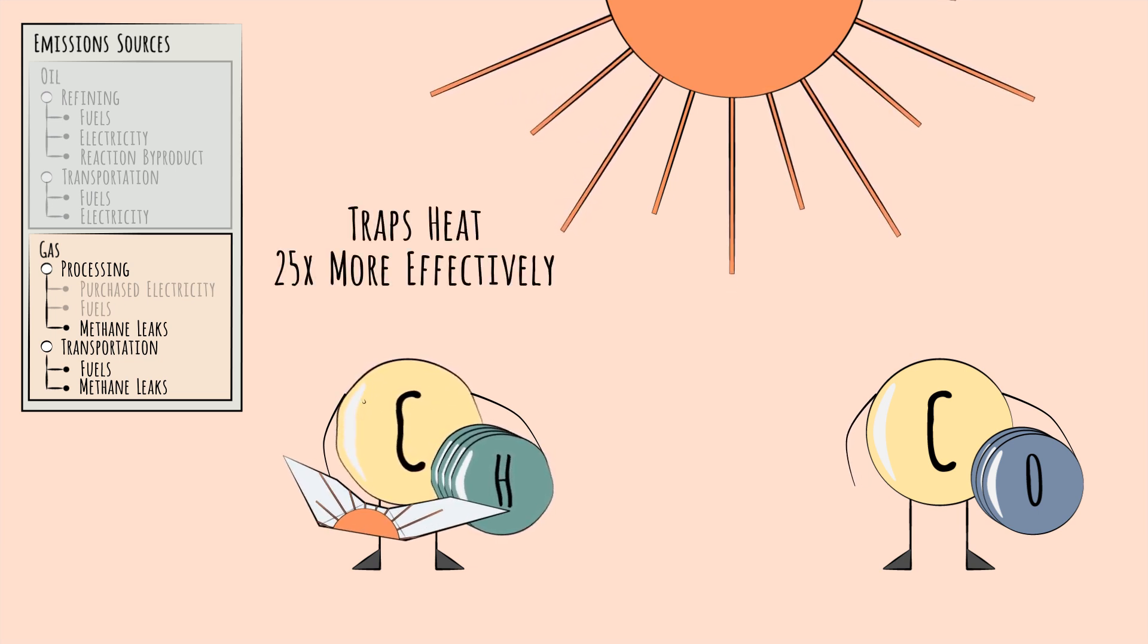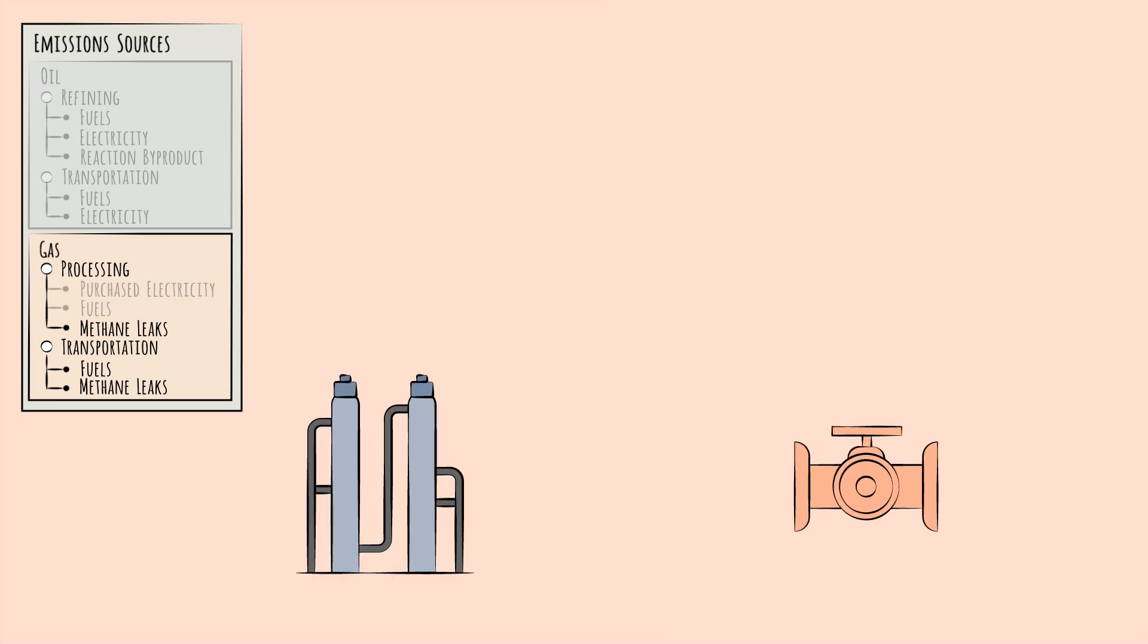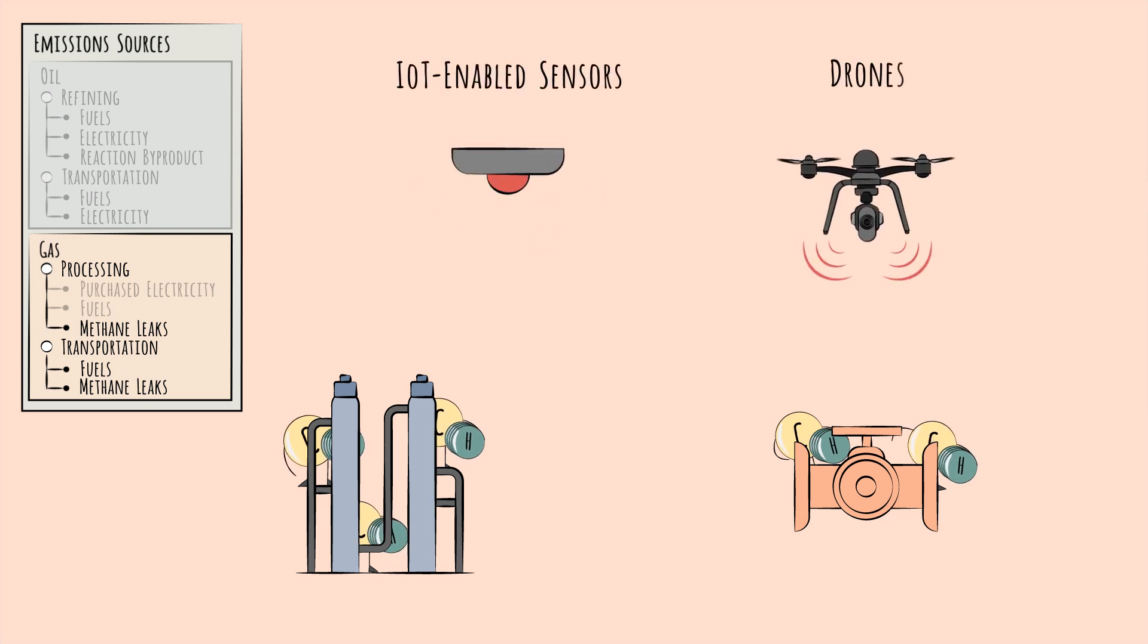To fight methane leaks, companies are increasing the rigor of their leak detection efforts, deploying more IoT-enabled sensors and even drones that can detect escaping methane via onboard sensors.